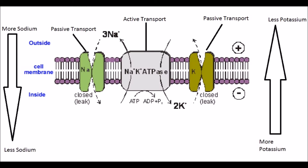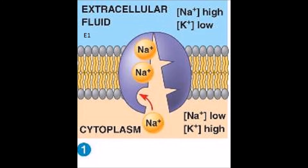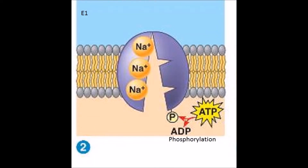The cell uses ATP to power the sodium-potassium pump. In step one, the transport protein has a high affinity for sodium ions inside the cell. It can transport three sodium ions at once. The image shows three sodium ions entering the pump. Once the sodium ions are situated in the pump, an ATP molecule donates one of its phosphates to the transport protein, becoming a molecule of ADP. This process is called phosphorylation.